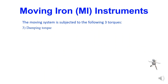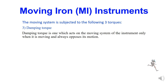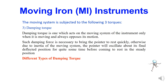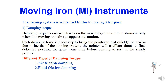The third one is damping torque. The damping torque acts on the moving system of the instrument only when it is moving and always opposes its motion. Such damping force is necessary to bring the pointer to rest quickly. Otherwise, due to inertia of the moving system, the pointer will oscillate like a pendulum about its deflected position for quite some time before coming to rest. Different types of damping are available: air friction damping, fluid friction damping, and eddy current damping.